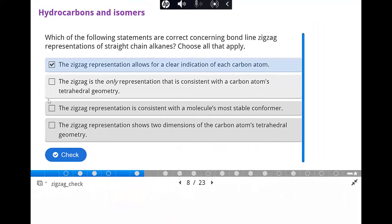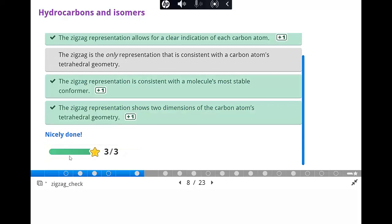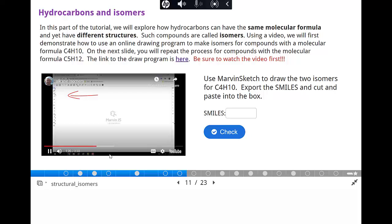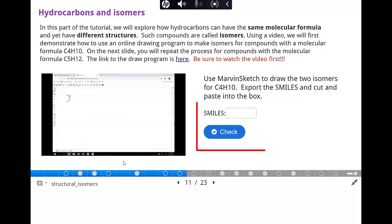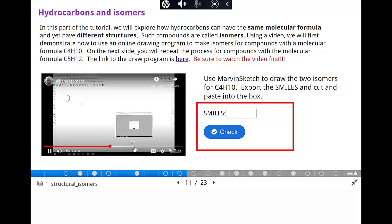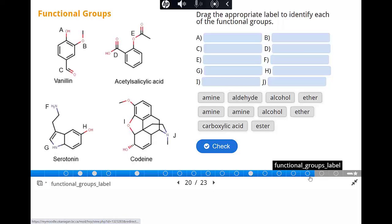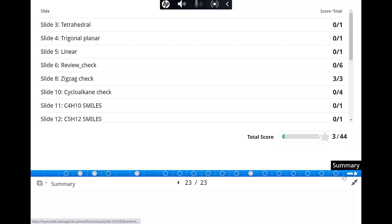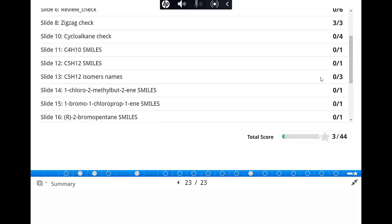The videos were then followed up with relevant questions. The students were also guided in using an online chemistry draw software. To check the correctness of their drawings, a unique code called a SMILES code could be exported and then checked in the H5P quiz feature. The scores of the tutorial would be tallied and a perfect score would allow the student to access a follow-up post-tutorial quiz.